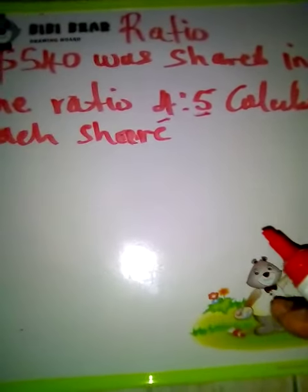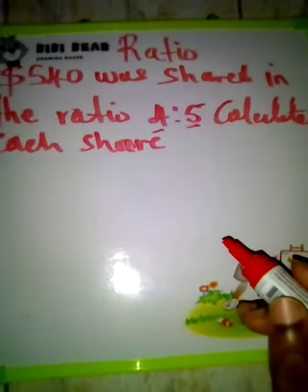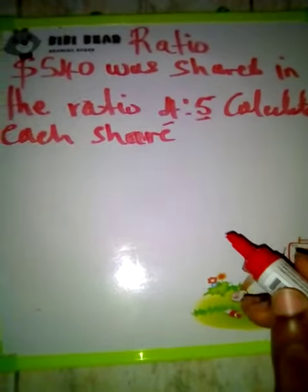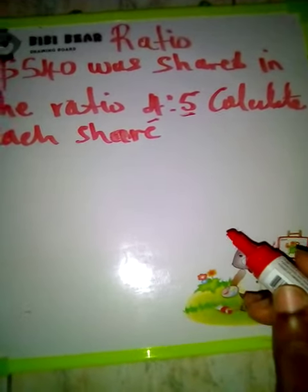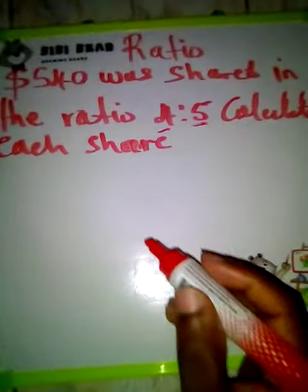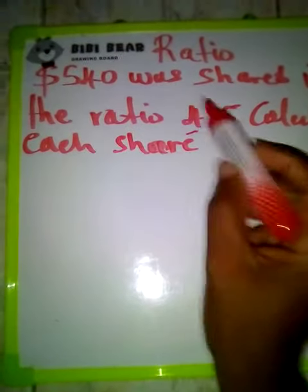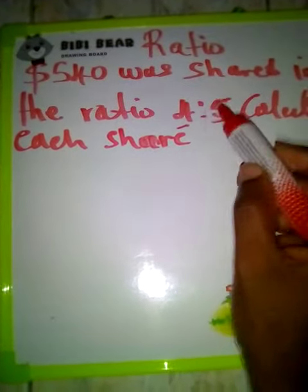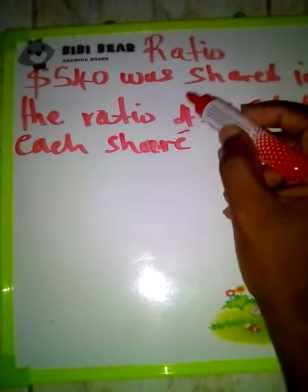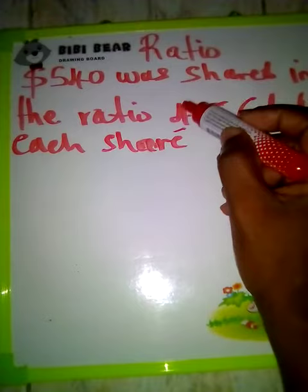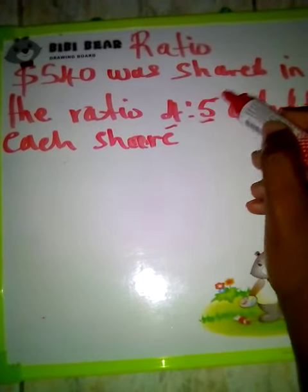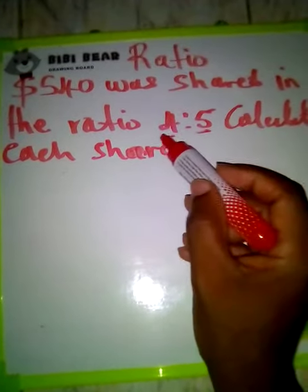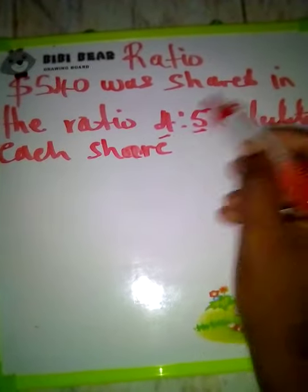This question is a ratio problem: $540 was shared in the ratio 4 to 5. The smaller share is represented by 4 and the larger share is represented by 5.